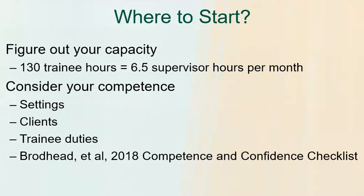5% of the hours must be supervised, which means that if your trainee is earning the maximum number of hours that they can per month — 130 hours — you as a supervisor would have to oversee them six and a half hours every month. So if you had two trainees, you're at 13 hours per month and it can add up very quickly, especially if your job is not solely to supervise other people.